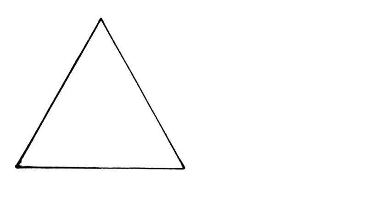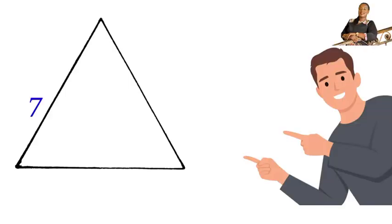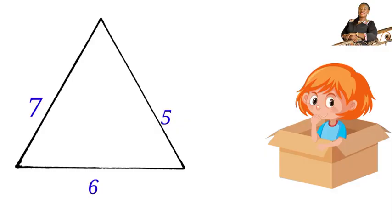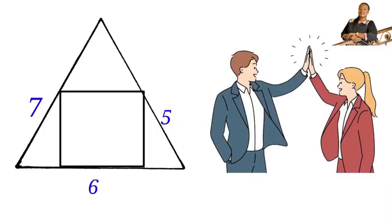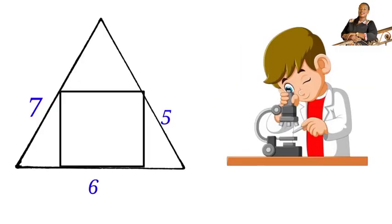We are given a scalene triangle whose sides are seven, five, and six, and a square inscribed inside it such that two vertices of the square touch the triangle at two points. We are to find the area of the square.